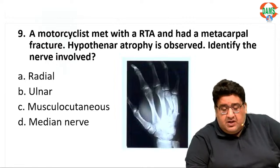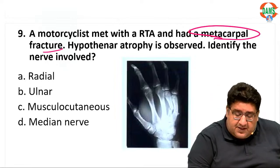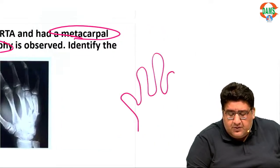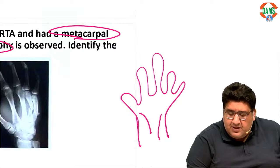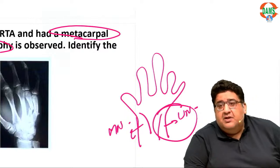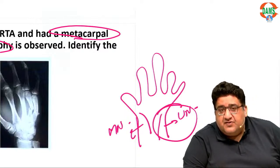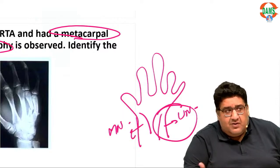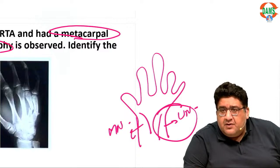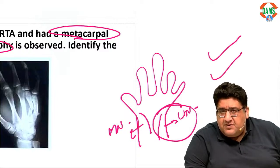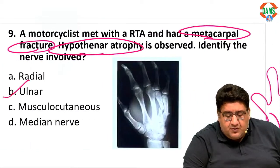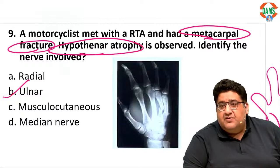A motorcyclist met with an RTA and had a metacarpal fracture with hypothenar atrophy. You have a thenar eminence — supplied by the median nerve — and a hypothenar eminence — supplied by the ulnar nerve. All hypothenar muscles — abductor digiti minimi, flexor digiti minimi, opponens digiti minimi, palmaris brevis — are supplied by the ulnar nerve. So obviously the answer has to be ulnar nerve.